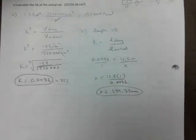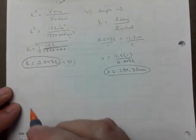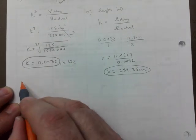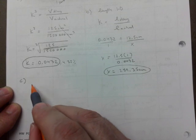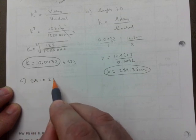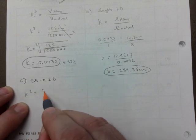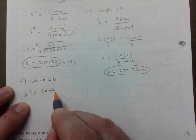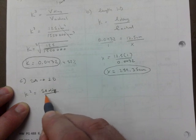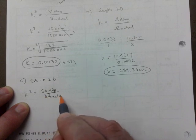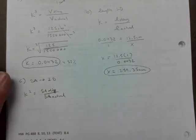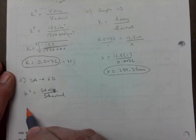And the last one: calculate the surface area of the actual car. Surface area, you should be thinking 2D, so whatever you do, your formula will start like this: k² equals surface area of diagram over surface area of actual.